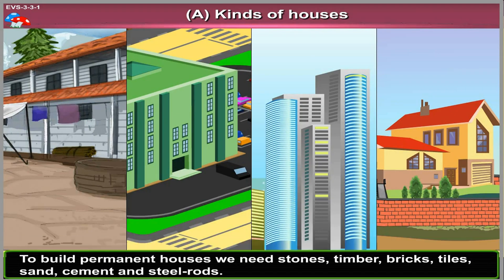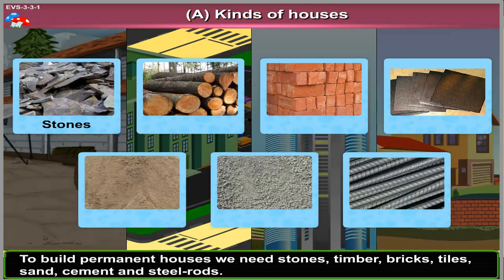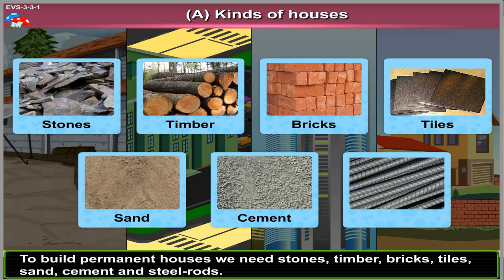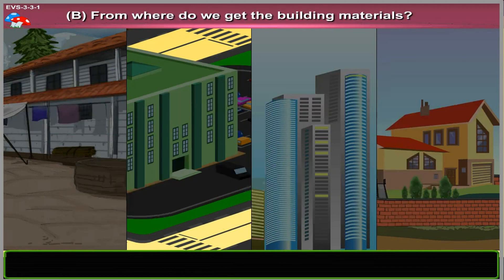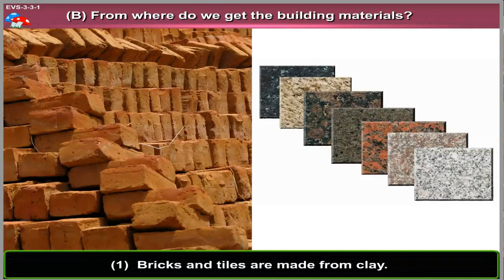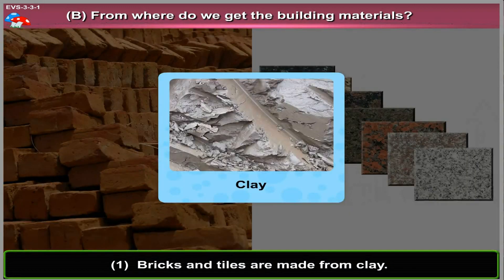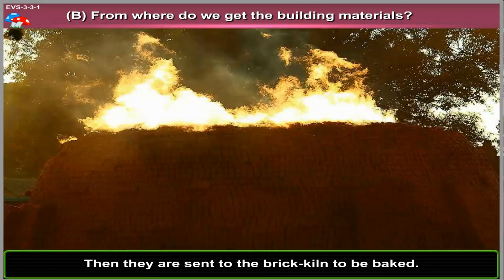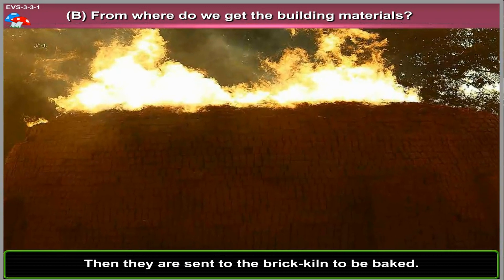To build permanent houses, we need stones, timber, bricks, tiles, sand, cement and steel rods. Bricks and tiles are made from clay, and then they are sent to the brick kiln to be baked.